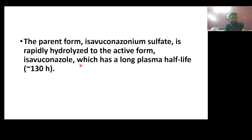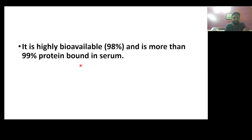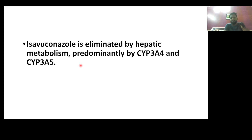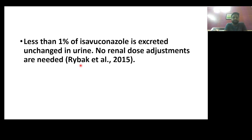Isavuconazole has a long plasma half-life of around 130 hours. It is highly bioavailable at around 98% and is more than 99% protein bound in the serum. Oral bioavailability of the active form is 98%. Isavuconazole is eliminated by hepatic metabolism, predominantly by CYP3A4 and CYP3A5. Less than 1% is excreted unchanged in urine, so no renal dose adjustments are needed.